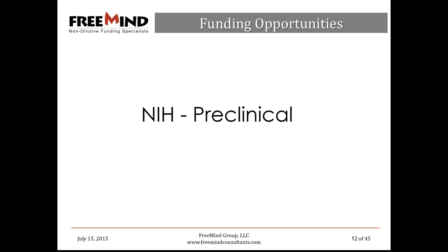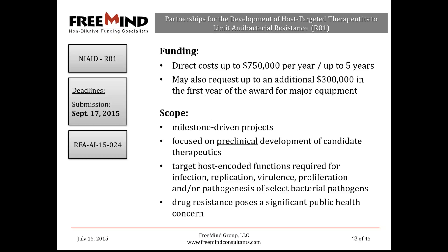NIAID supports extramural research focused on understanding, controlling, and preventing diseases caused by virtually all infectious agents. Let's first look at some examples of solicitations for preclinical funding opportunities, then follow with clinical stage opportunities. First up is the R01 Research Project Grant: Partnerships for Development of Host-Targeted Therapeutics to Limit Antibacterial Resistance. R01 is a great mechanism and, as we discussed last week, it's not only for academics.